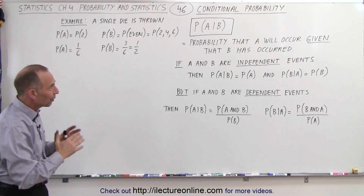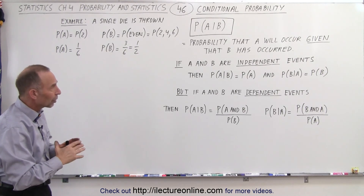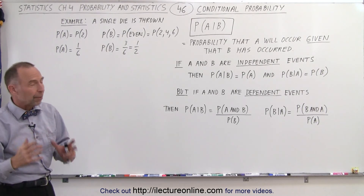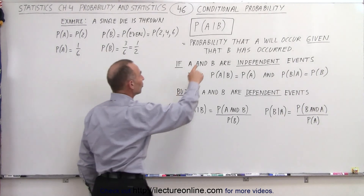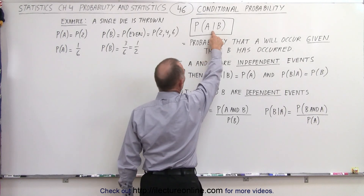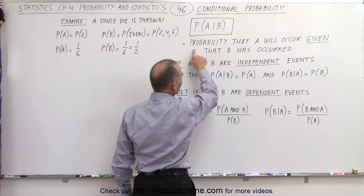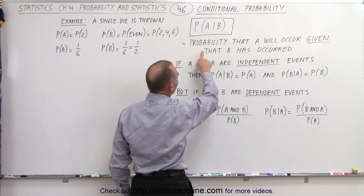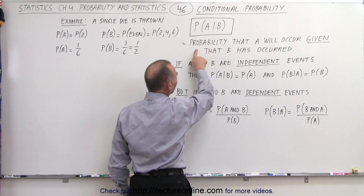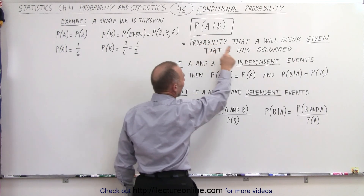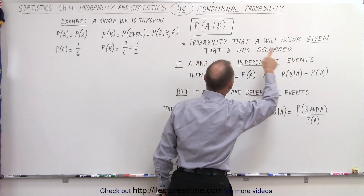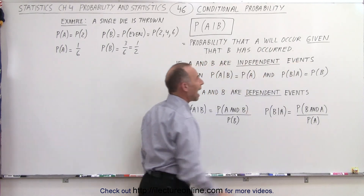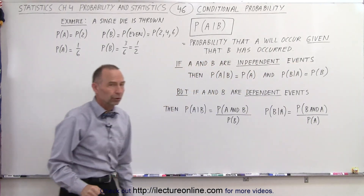If we write a conditional probability statement such as this, it translates to the following sentence: it is the probability that A will occur given that B has occurred.